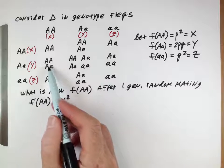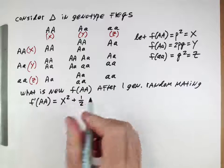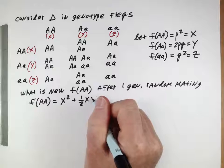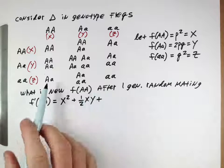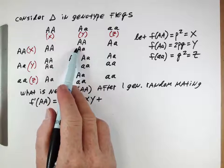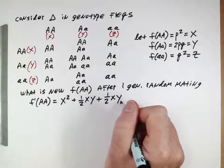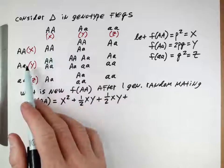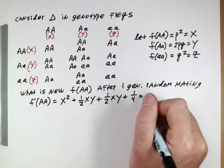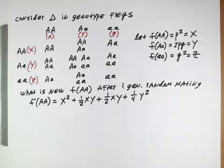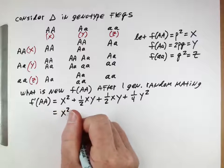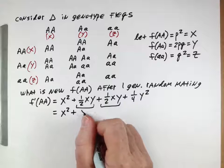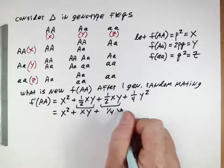This genotype also comes from here — half of all the offspring of that mating produce this genotype, and how common is that mating? It's x times y. Where else does that genotype come from? From here — half of all those matings. And then that genotype is also produced in a quarter of all the matings between those genotypes, so that's one quarter of the time, and how frequent is that mating? Y squared. We can simplify this: x squared, these two terms combine into a single xy, and then we still have one quarter y squared.